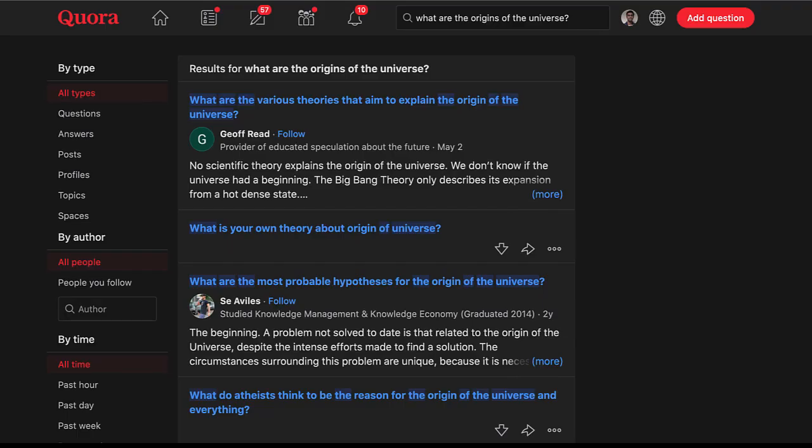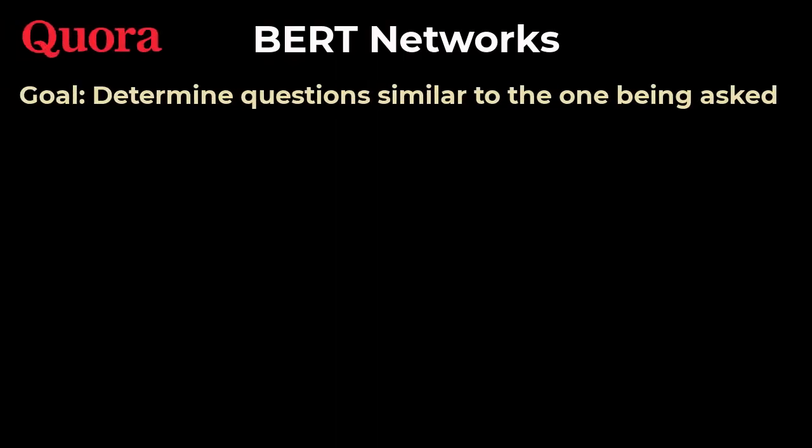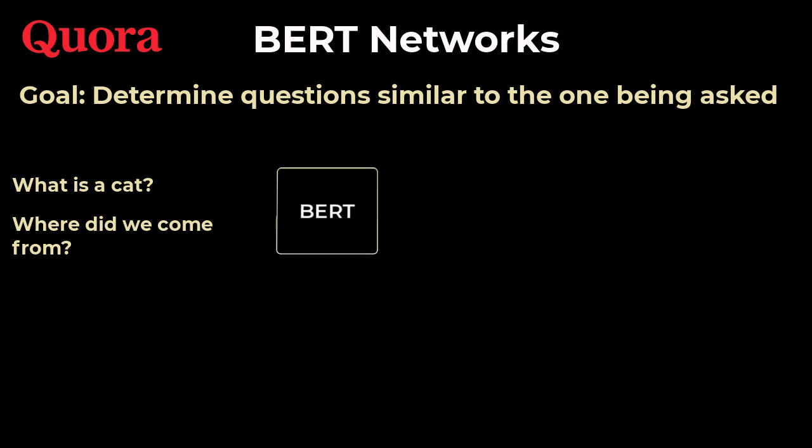You're a data scientist at Quora, which is a question-answer site, and you want to design a system that finds related questions to the one that is currently being asked. How would we solve this with BERT? So let's just diagnose this step-by-step. We first take this question and another question that has been asked in the past, pass both of these into BERT.